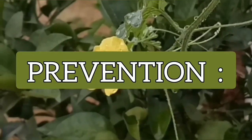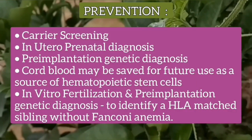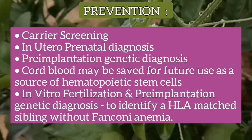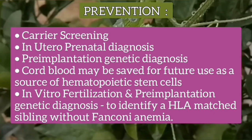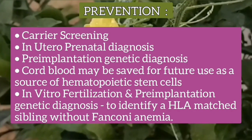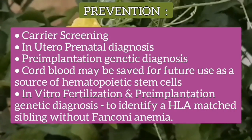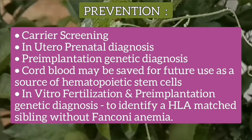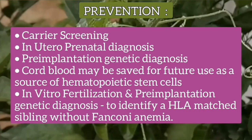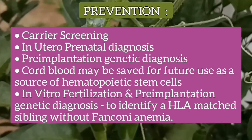For prevention, carrier screening can be offered as part of reproductive counseling. In utero prenatal diagnosis is available, and pre-implantation genetic diagnosis is also possible. In families with an affected proband, cord blood may be saved for future use as a source of hematopoietic stem cells at the birth of a sibling.